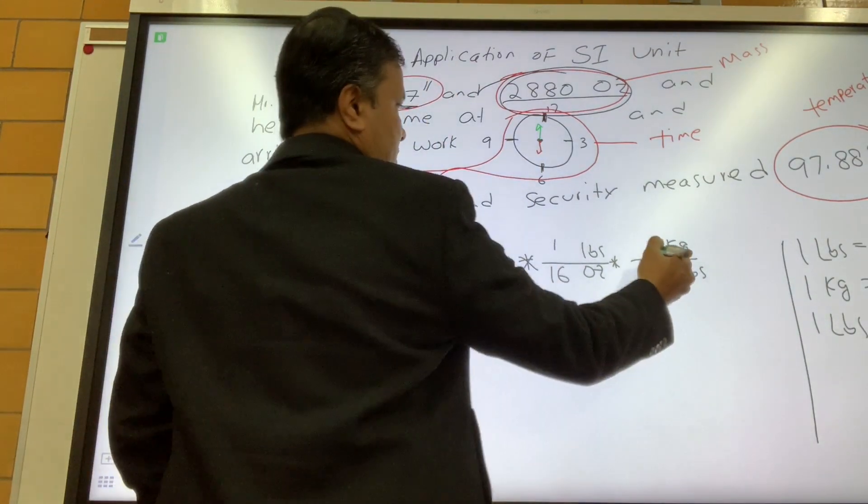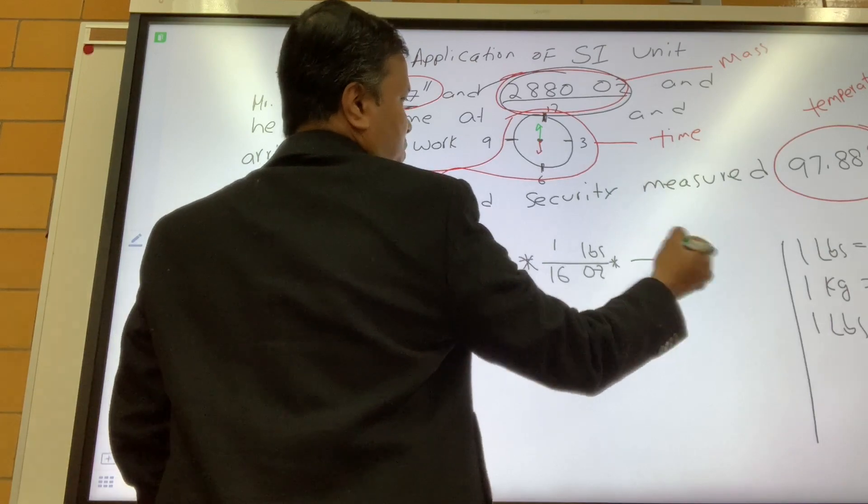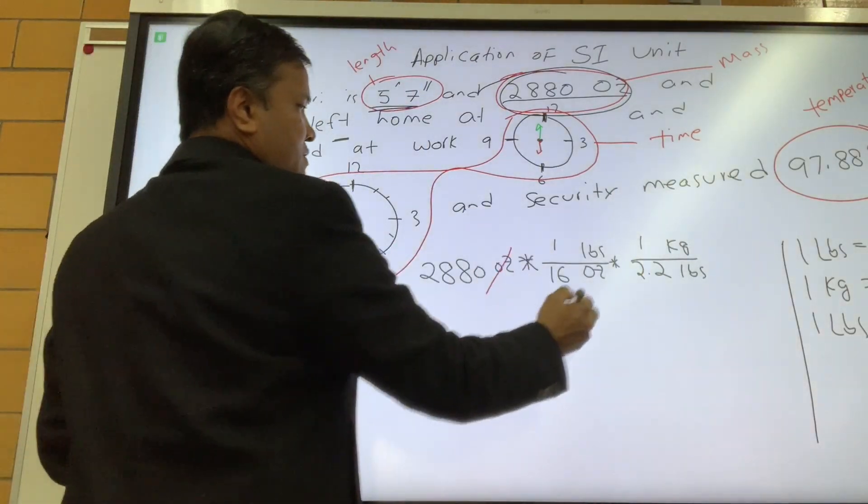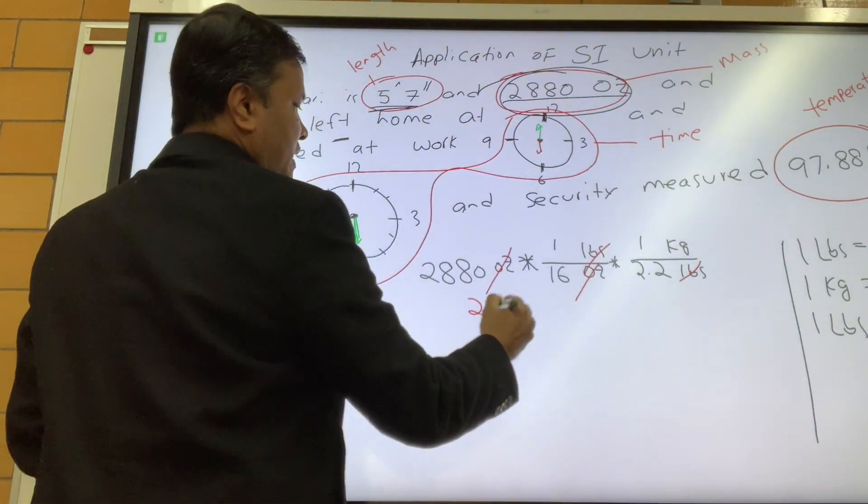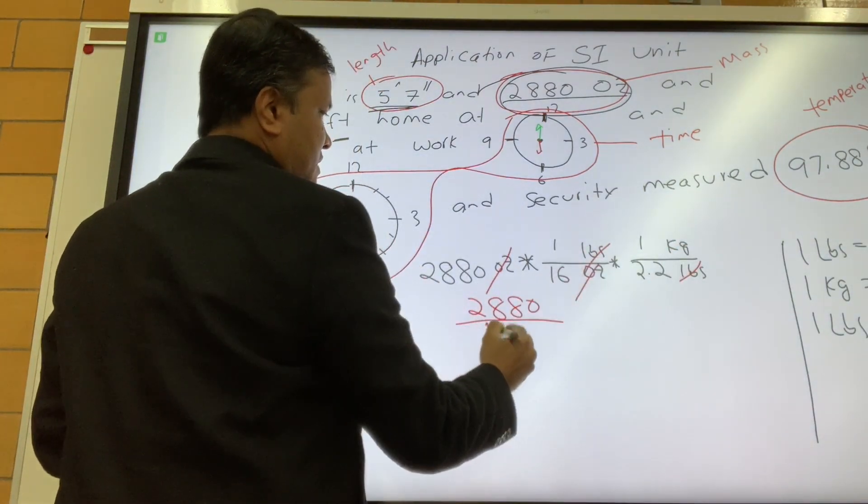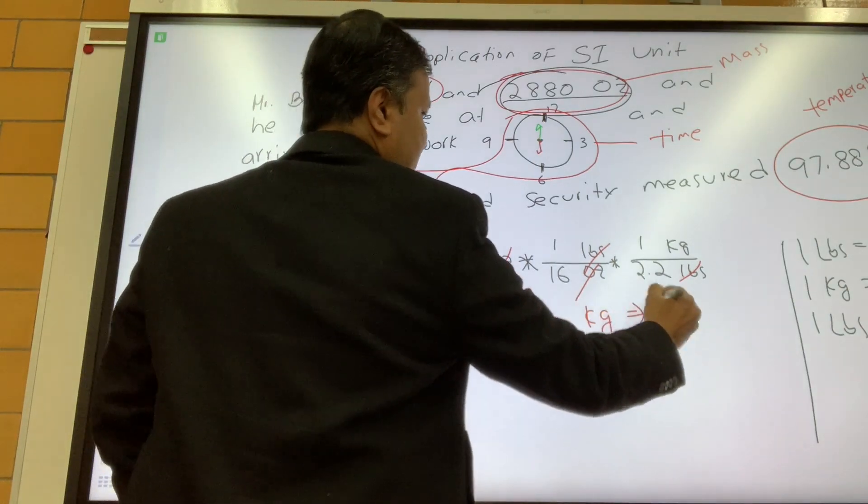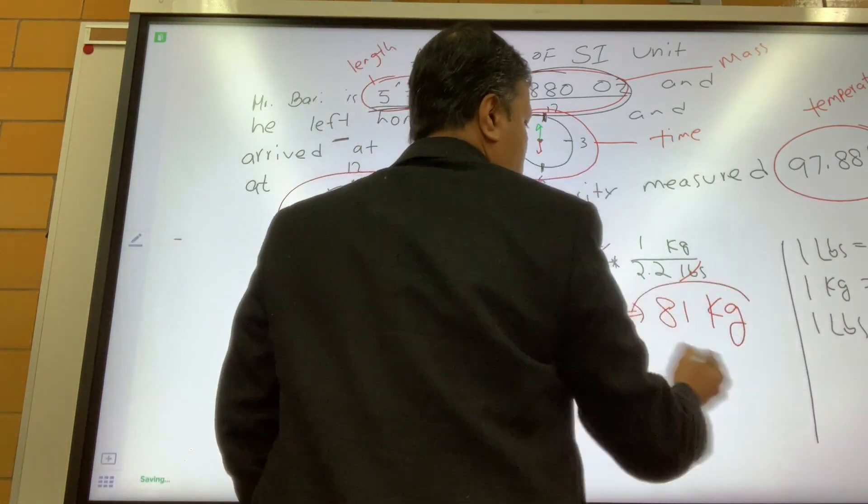Now you're going to convert it to the kilogram. Kilogram and pound. So one kilogram is 2.2 pound. So ounce cancel, pound cancel. So 2,880 divided by 16 times 2.2 kilogram, so it's 81 kilogram. So Mr. Berry is 81 kilogram.